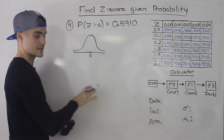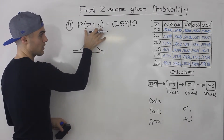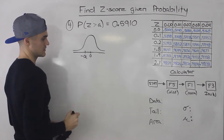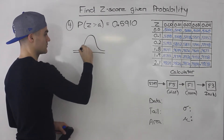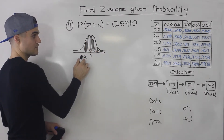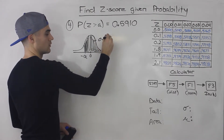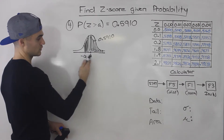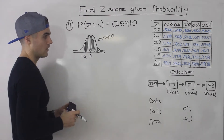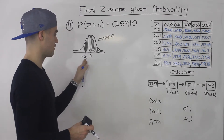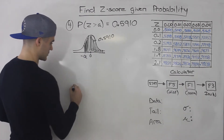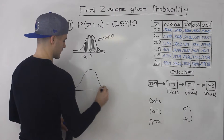If you remember the four cases outlined at the beginning, if you're working with a right-tailed probability that's greater than 0.5, then you know that the z-score you're going to be working with is negative — it's going to be a negative a-value. So this answer is going to be negative because the right-tailed probability — the probability to the right of that a-value — is 0.5910. It's greater than 0.5, so the z-score is going to be to the left of 0. The question is how do we use the z-table to find this z-score?